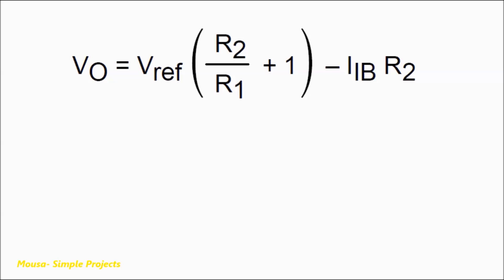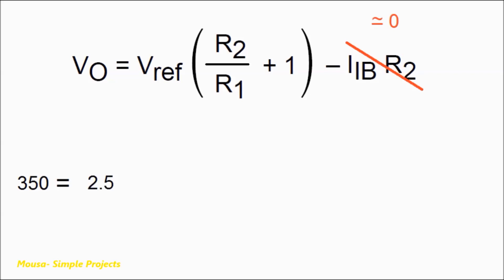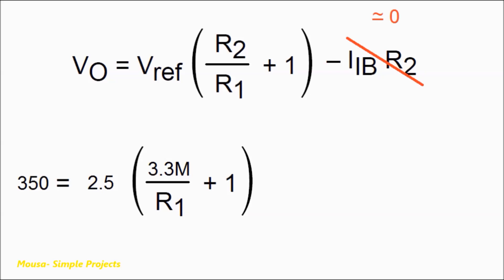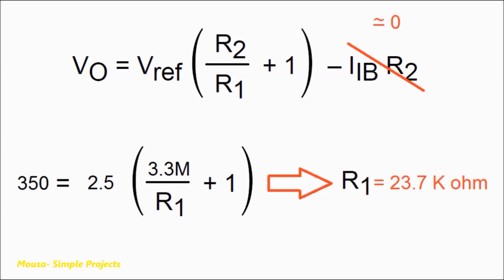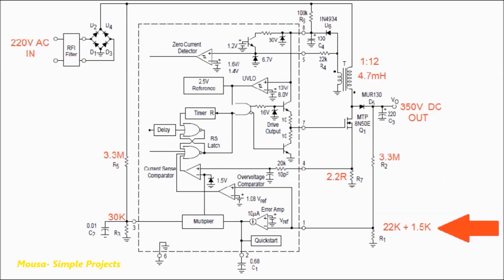Finally, the last formula is used for determining the resistor values of the output voltage divider. The output voltage I need is 350 volts DC, the voltage reference according to the datasheet is 2.5 volts, and I would like to use a 3.3 megaohm resistor for R2, so R1 will be 23.7 kilohms. I used two resistors in series: 22 kilohms and 1.5 kilohms. The winding number ratio between primary and secondary of the transformer should be 12:1 according to the datasheet, using 60 turns in the primary and 5 turns in the secondary.